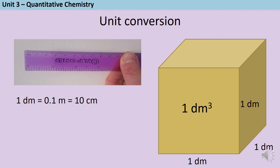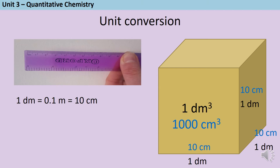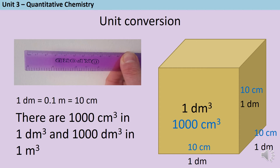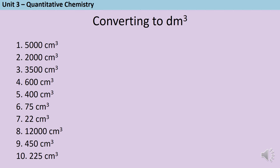One decimetre cubed is actually the same thing as a litre — it's just the proper standard international unit way of saying it. Now, if instead of writing those lengths as one decimetre I'd written them as 10 centimetres, which means exactly the same thing, then I would calculate the volume as 10 times 10 times 10, which gives a thousand centimetres cubed. So there are a thousand centimetres cubed in one decimetre cubed, and incidentally there are a thousand decimetres cubed in one metre cubed.